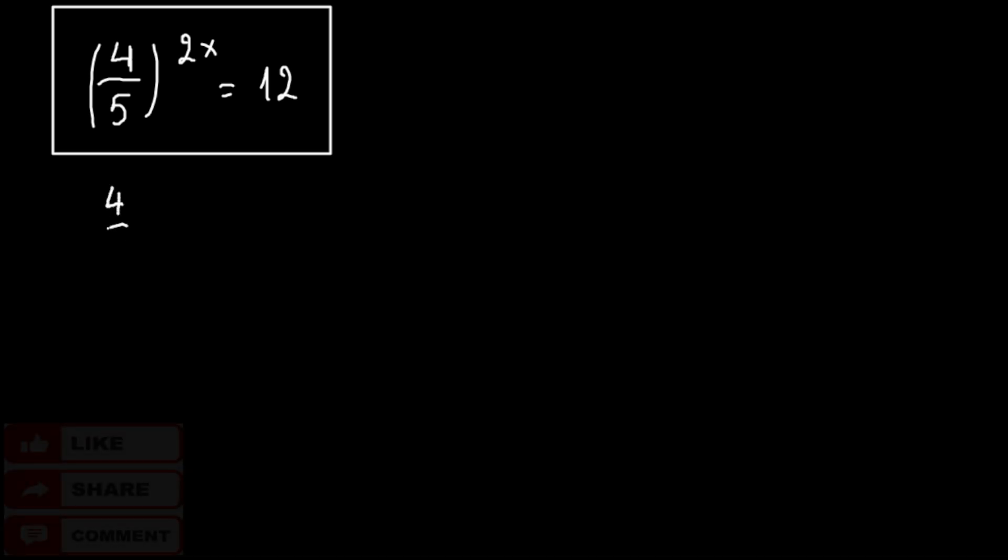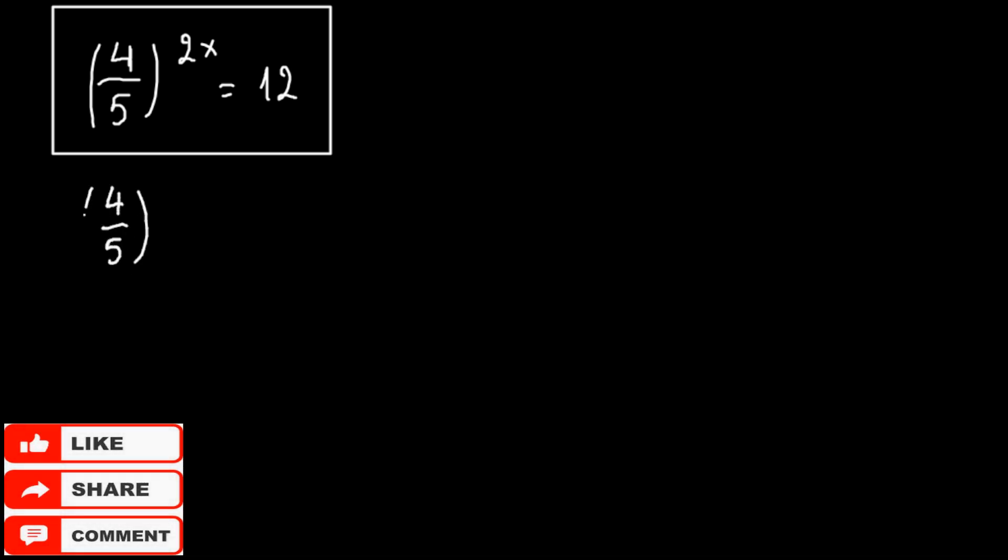We rewrite it here: 4 over 5 to the 2x equals 12.